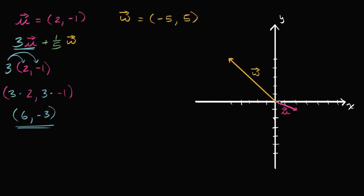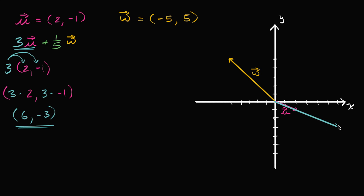The vector six comma negative three: starting at the origin, we move six in the x direction and negative three in the y direction, landing right about there. This is the vector three u.